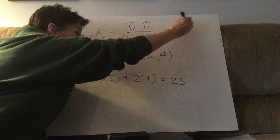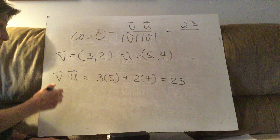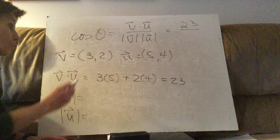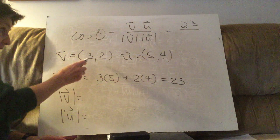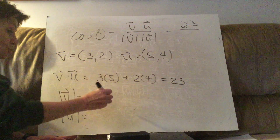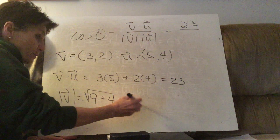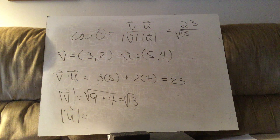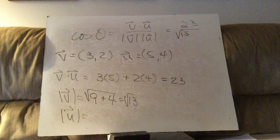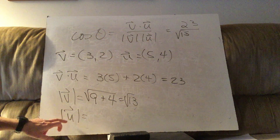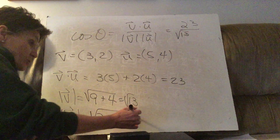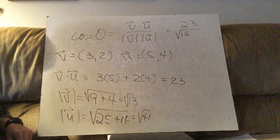We have 23 on top. Now we need the magnitudes of the two vectors. For v, square the first, square the second, add together and take the square root — that's the square root of 13. For u, the magnitude is the square root of 25 plus 16, which is the square root of 41.